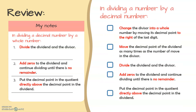And in dividing a number by a decimal number, we change first the divisor into a whole number by moving its decimal point to the right of the last digit. Then, we move the decimal point of the dividend as many times as the number of places moved in the divisor.